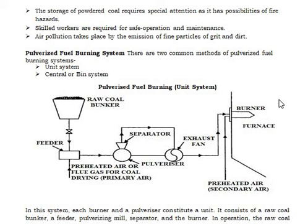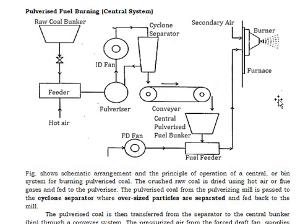As I have discussed the bin system in the previous class, I am repeating because this is very important. In the unit system, you feed raw coal into the bunker and it feeds to the super separator which separates it; the exhaust fan rotates and the burner sends it to the furnace, with secondary air also present.